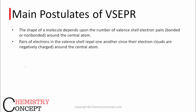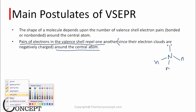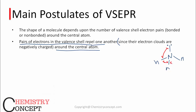The next postulate is that the basic assumption for this theory is that pairs of electrons in the valence shell repel one another around the central atom. Basically, if there are 4 electron pairs — 3 bond pairs and 1 lone pair — these electron pairs repel one another. It doesn't matter if they are bond pairs or lone pairs; they are electrons.